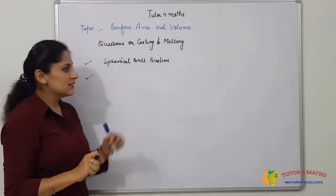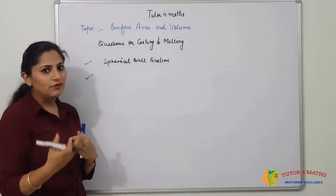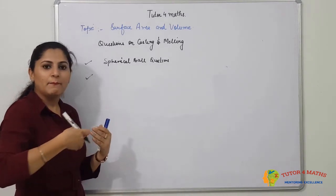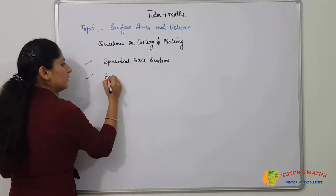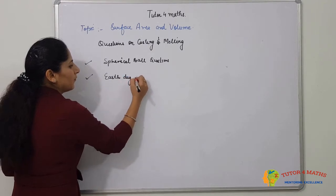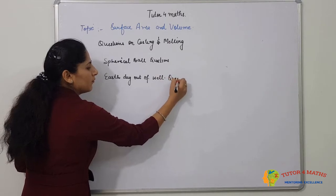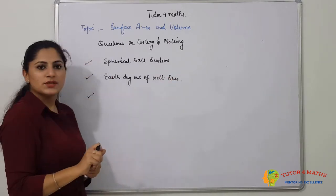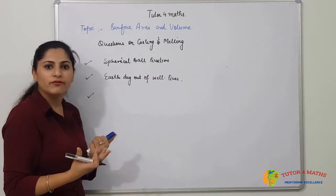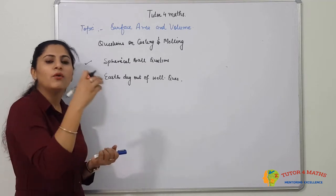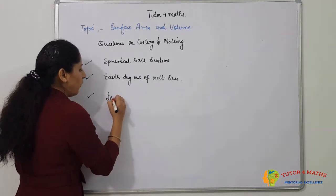The second type, under the same category of casting and melting, is earth dug out of a well that is used to make an embankment around it, and we need to find the height of the embankment. The third type involves a cubical jar of ice cream and asks how many ice cream cones can be filled from that particular jar — ice cream cone questions.